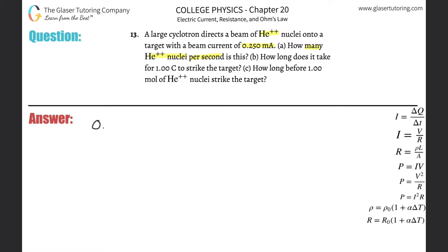So we have 0.250 milliamps. We know we need that in amps, so just do the conversion — take this value and multiply it by 10 to the minus 3. And that's now the value in amps.